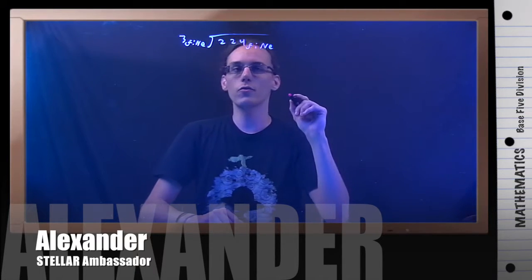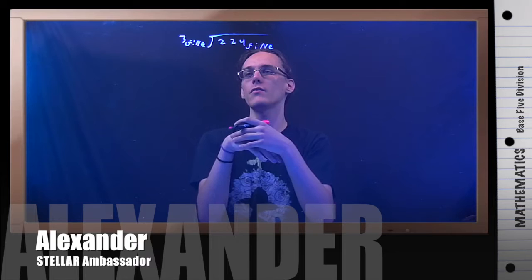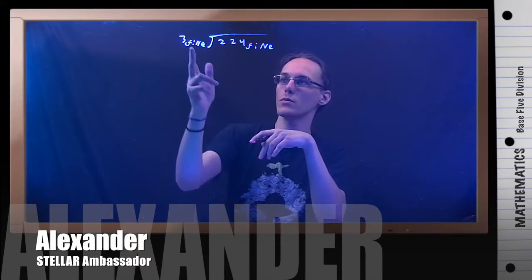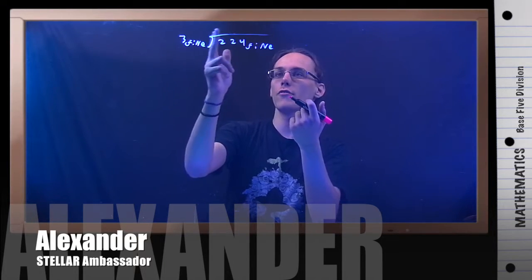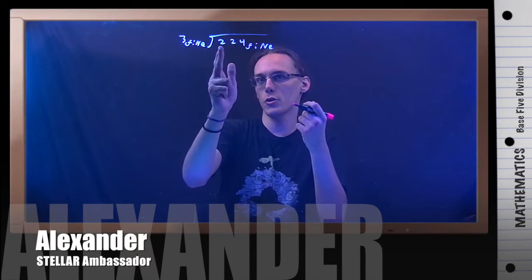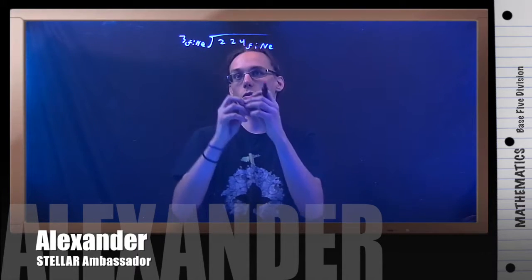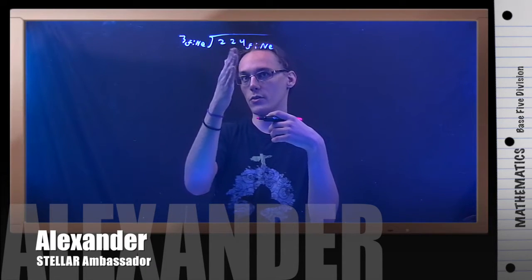If you think back to regular base 10 division, what you do is you see how many times your divisor fits into the dividend. You go by the different places — you don't want to do the whole number at once. You go as far as you need to, then see how many times it fits in.